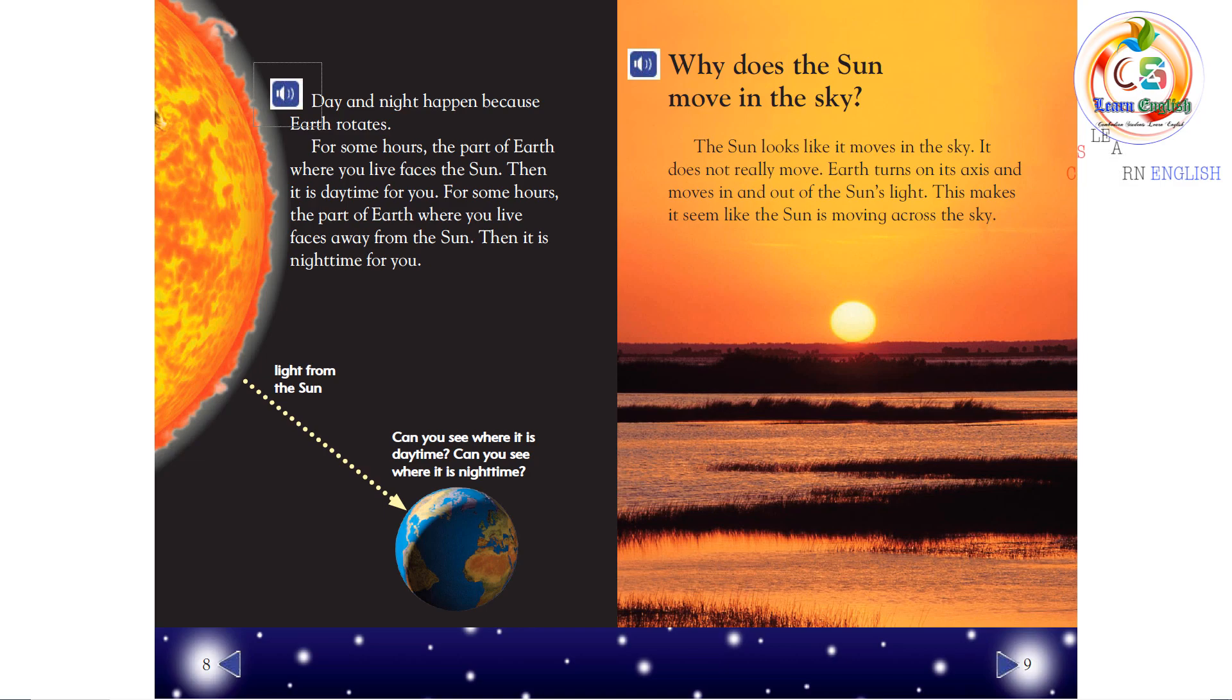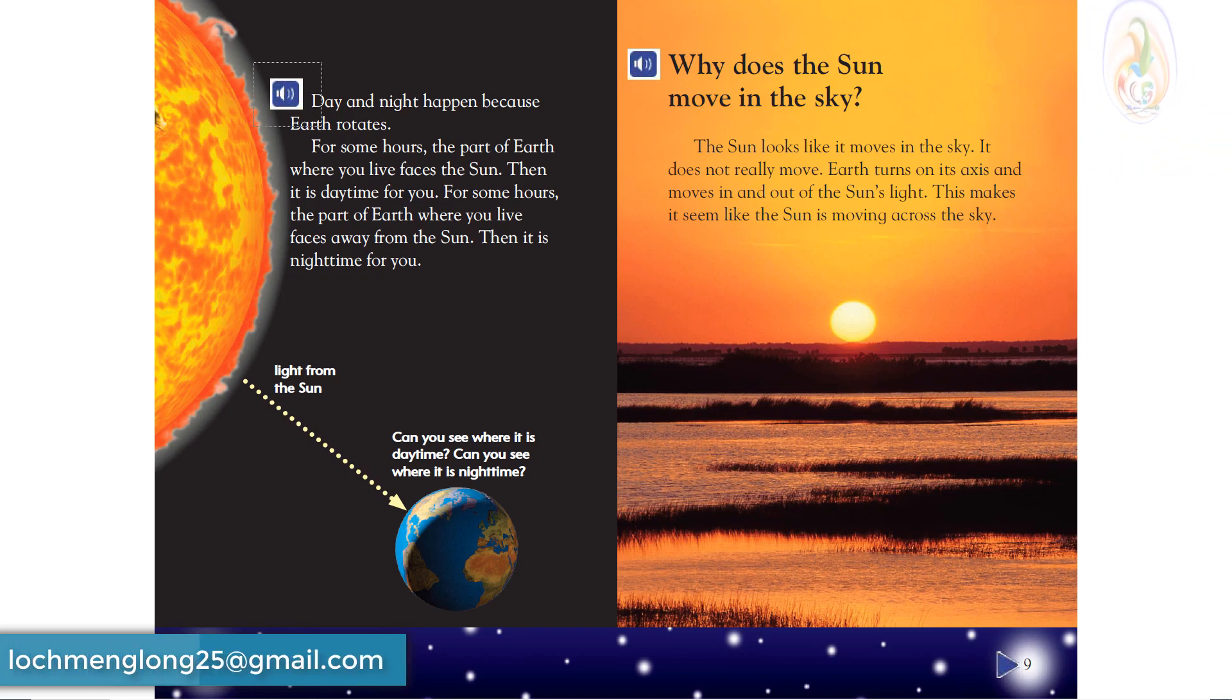Day and night happen because Earth rotates. For some hours, the part of Earth where you live faces the Sun. Then it is daytime for you. For some hours, the part of Earth where you live faces away from the Sun. Then it is nighttime for you.